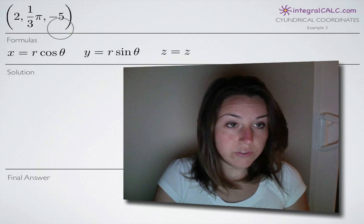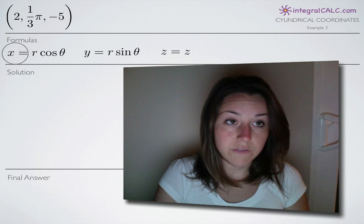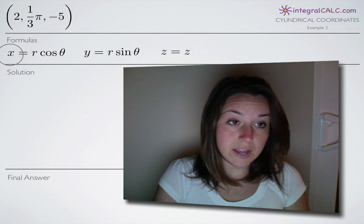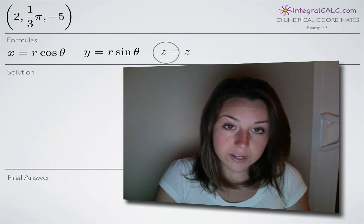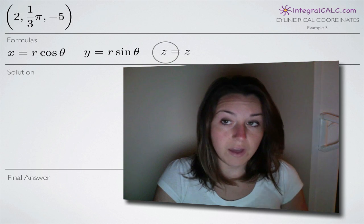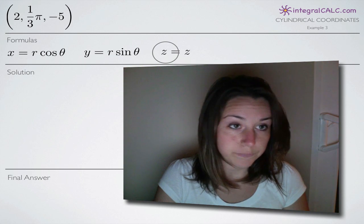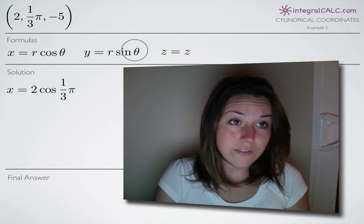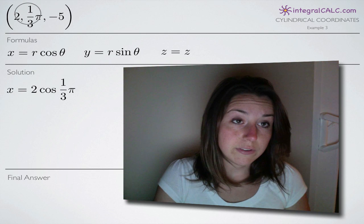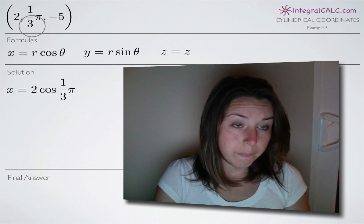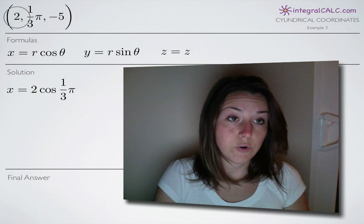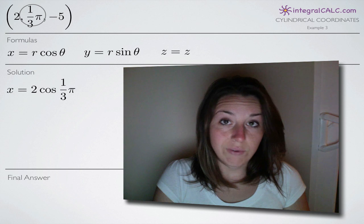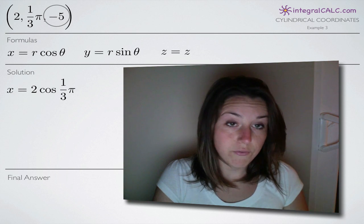So given that, we're going to be using these three formulas here to convert these cylindrical coordinates to rectangular coordinates. The first formula gives us the x coordinate, the second gives us the y coordinate, and the third gives us the z coordinate of our rectangular coordinates, which will be our final answer. All we have to do is plug in our cylindrical coordinates — 2 for r, pi over 3 for theta, and negative 5 for z.